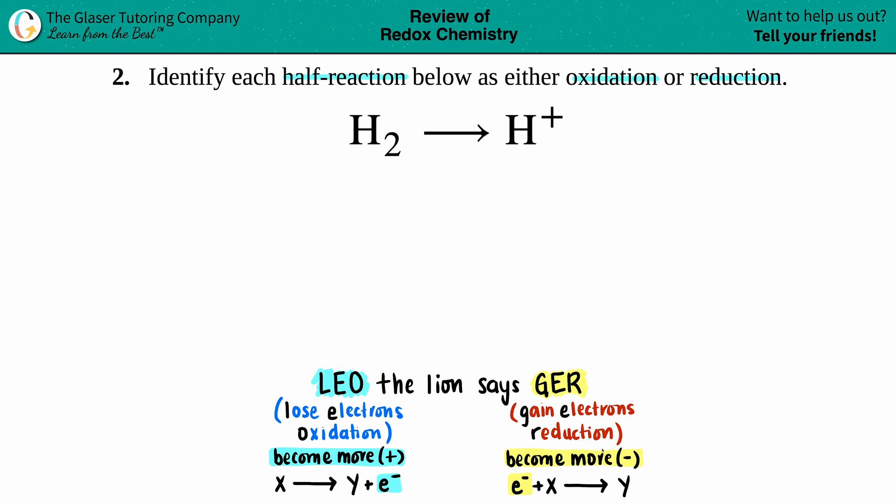If you have an equation, the easiest way is to see where those electrons are. If your electrons are on your product side, that's always oxidation - you lost them. But if your electrons are on the reactant side, that's reduction - you gain those.